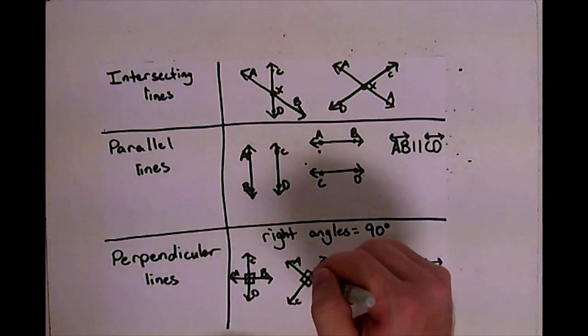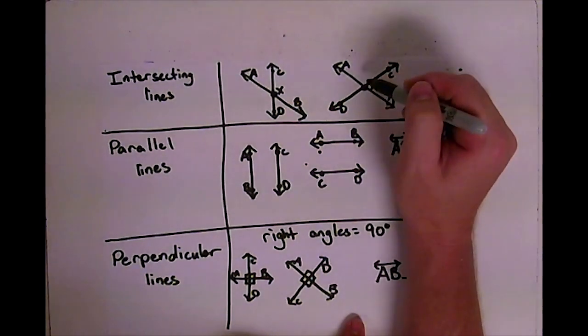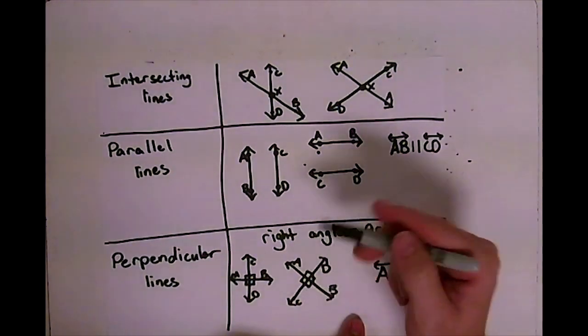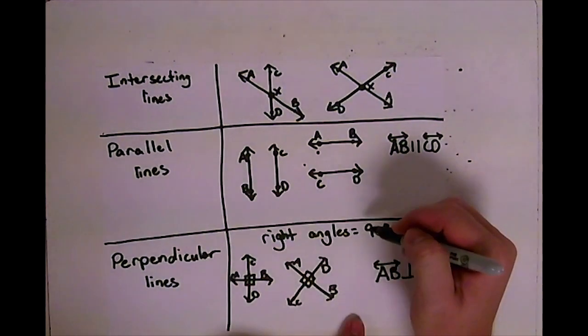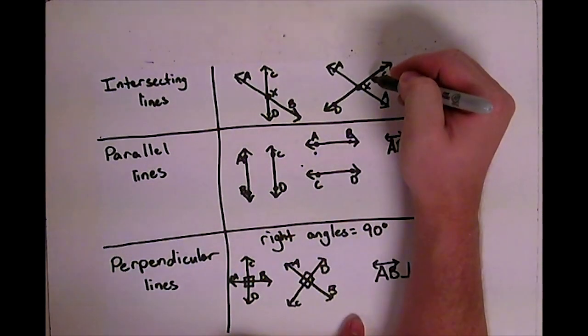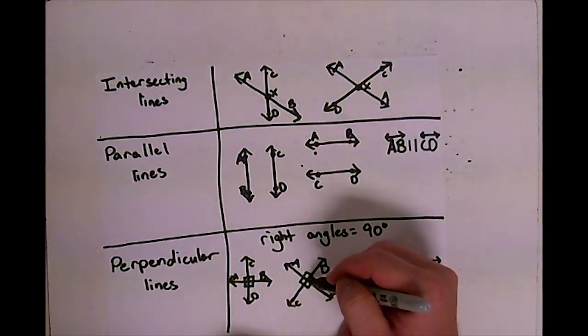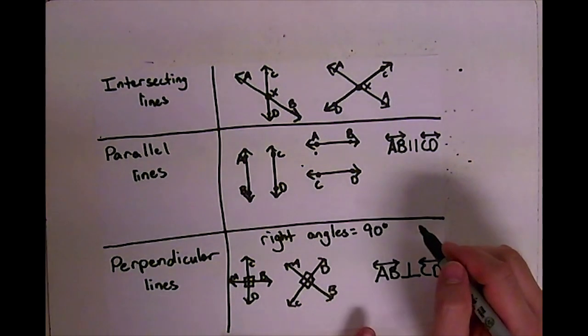Now the interesting thing here is that perpendicular lines are intersecting lines. But intersecting lines aren't always perpendicular. Remember, to be perpendicular, they have to be 90 degrees. These ones are not 90 degrees. But these are intersecting at this point, so they are actually intersecting lines as well.